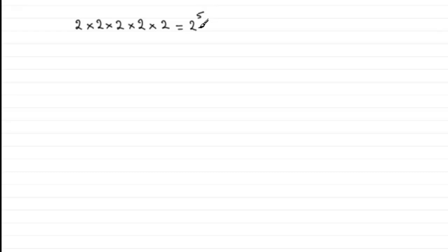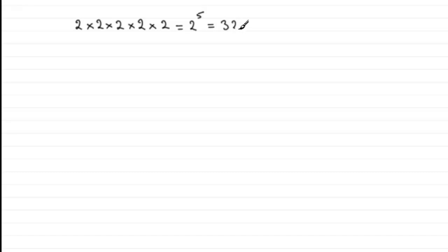If we work this out, it's a common mistake to think that two to the power five is ten — clearly it's not. You've got two times two which is four, times two is eight, times two again is sixteen, and then times another two is thirty-two. So two to the power five is equal to thirty-two.